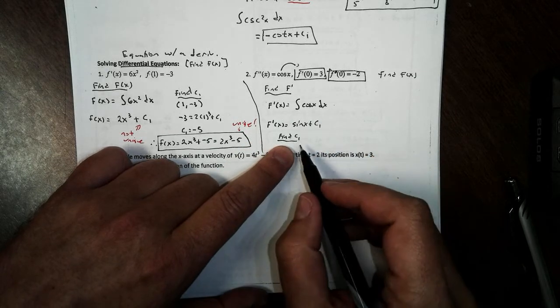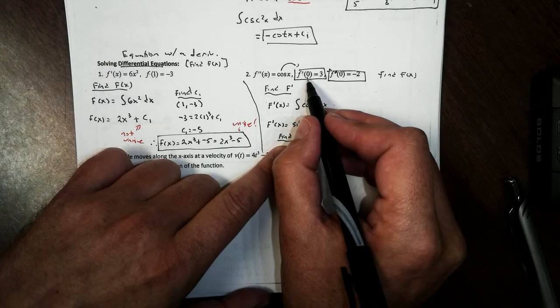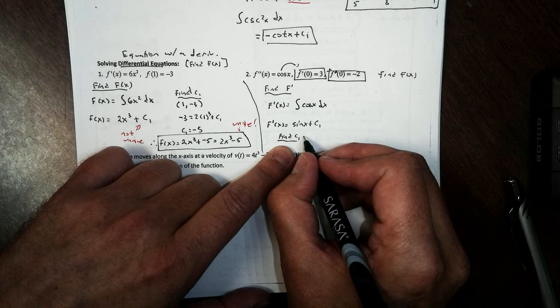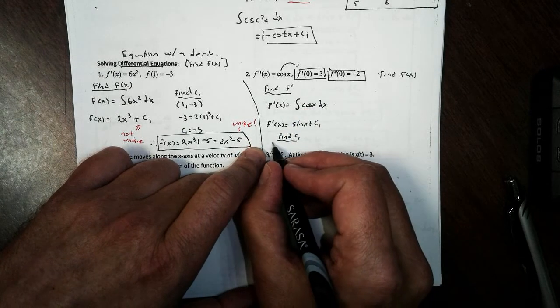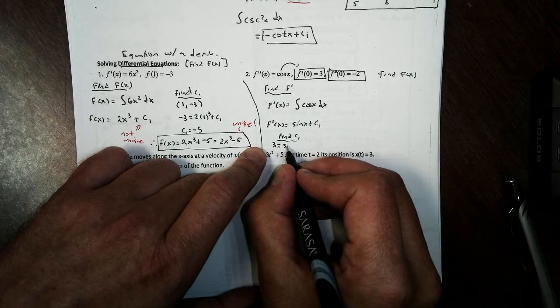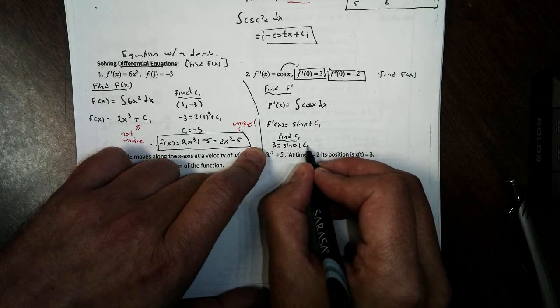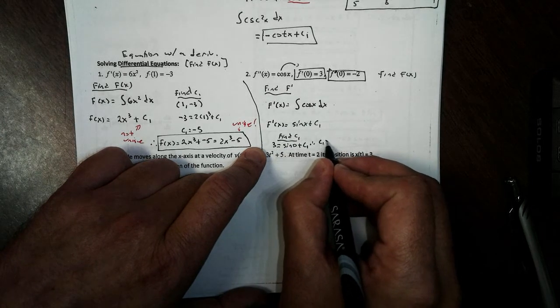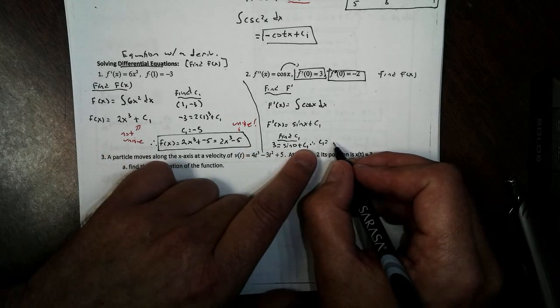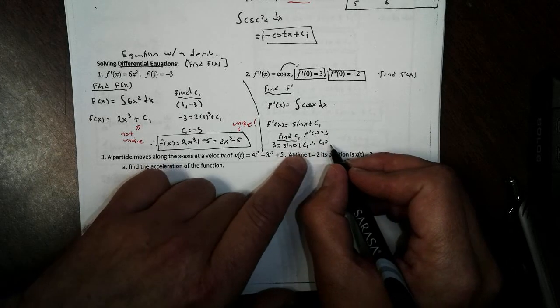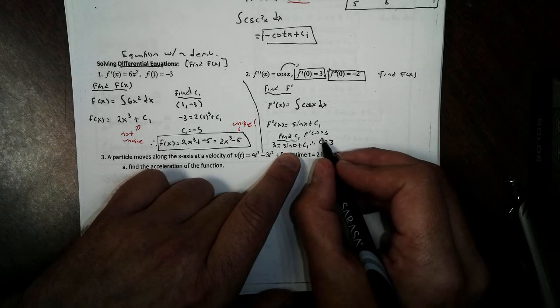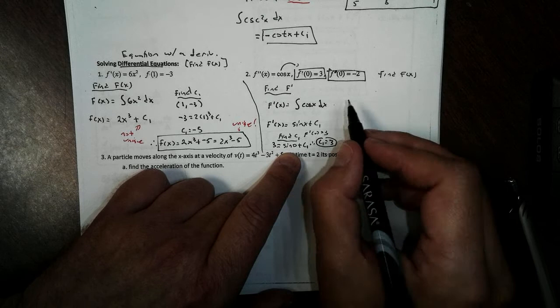To do that, I'm going to look at a condition. They tell me the slope at 0 is 3. So I can plug that in. 3 equals sine 0 plus c1. Therefore, c1 is equal to, and I can plug that in, right? Because f prime of 0 is 3. Sine of 0 is 0, so c1 is 3.